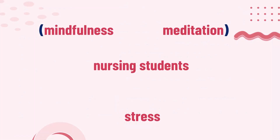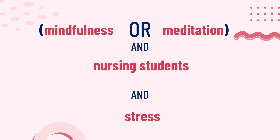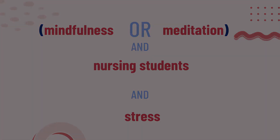I could add that to my search like this: mindfulness OR meditation, AND nursing students, AND stress. Notice I now have both AND, which brings the different keywords of my topic together, and OR, which brings the similar keywords in my topic together.